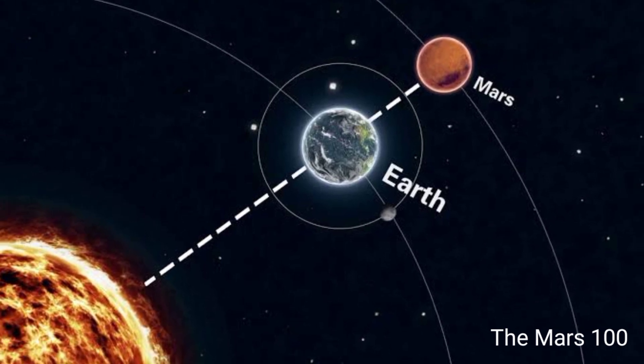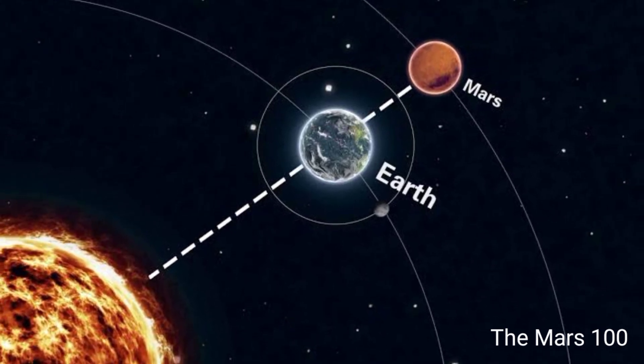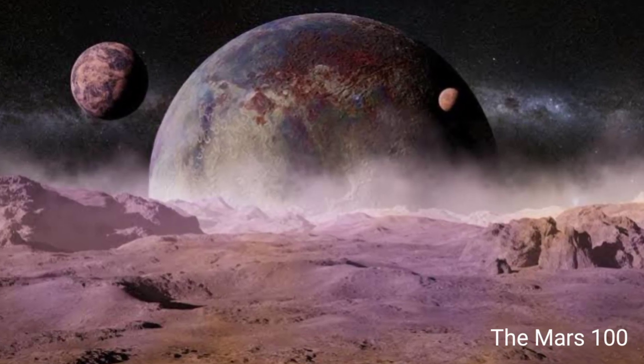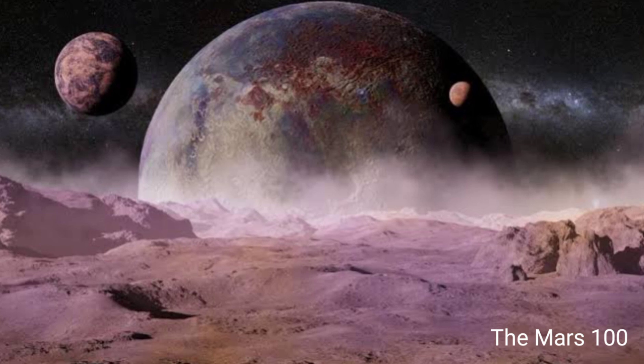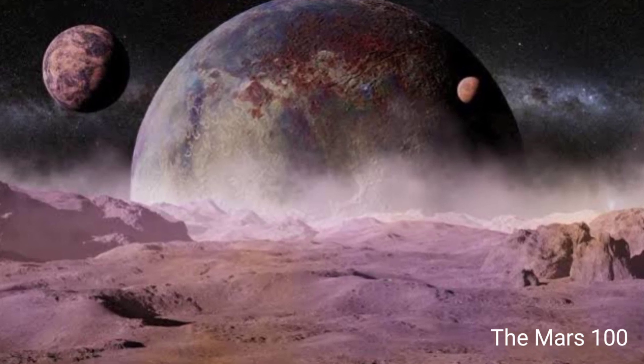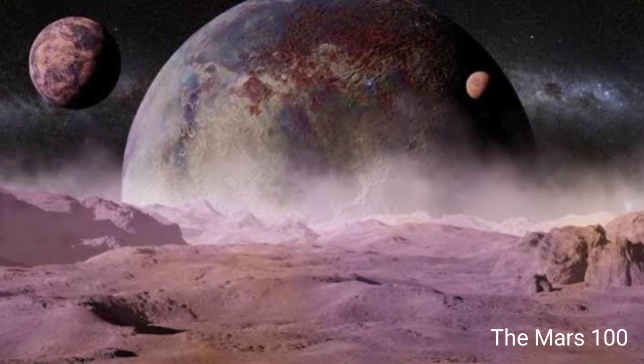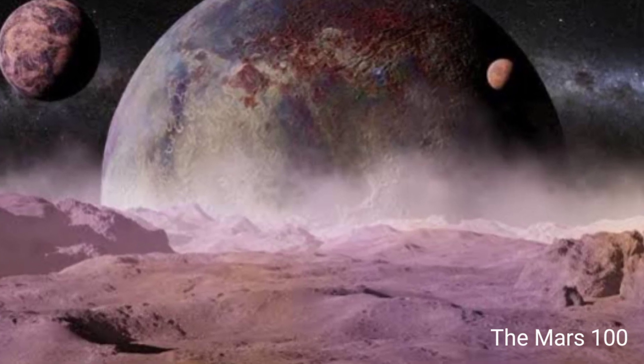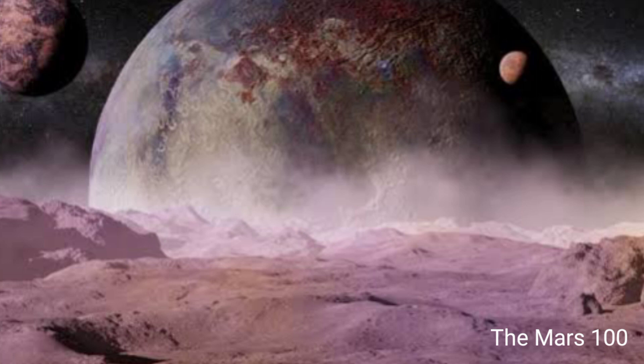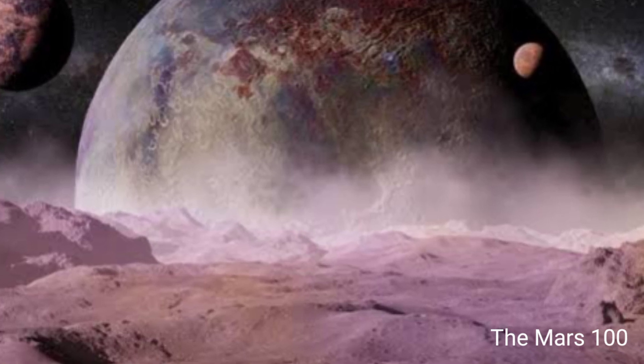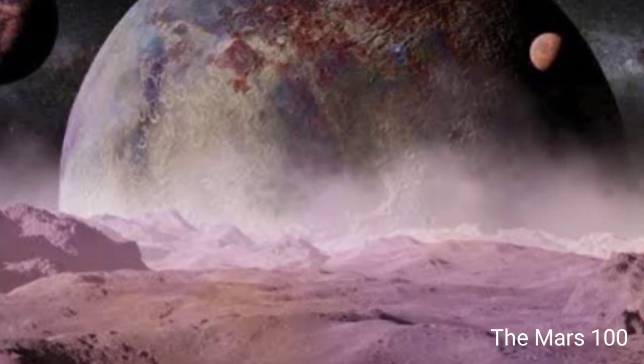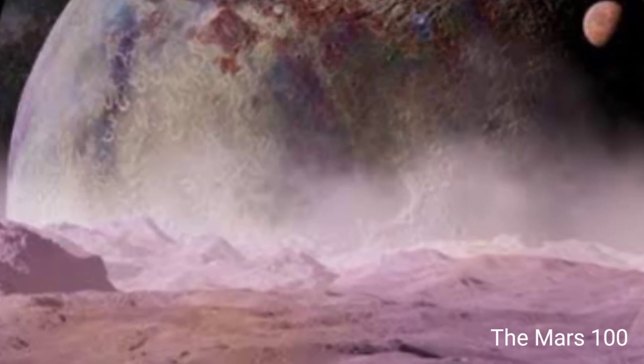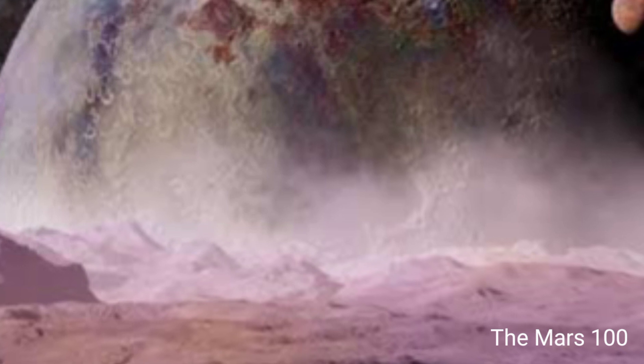There they can be 250 million miles (401 million kilometers) apart. According to the New York Times, the average distance between Earth and Mars is 140 million miles (225 million kilometers).